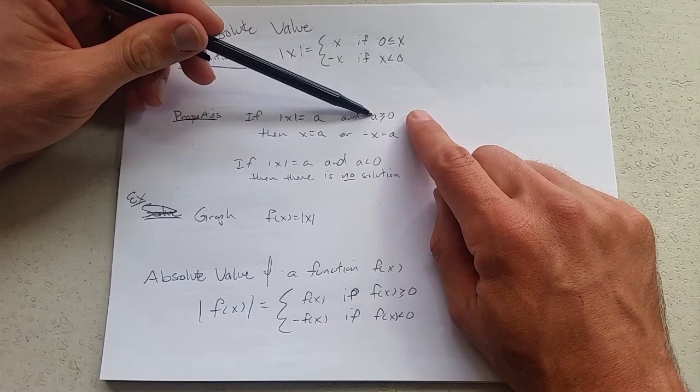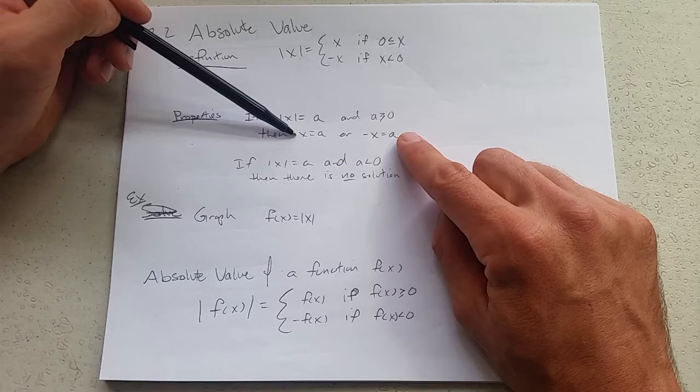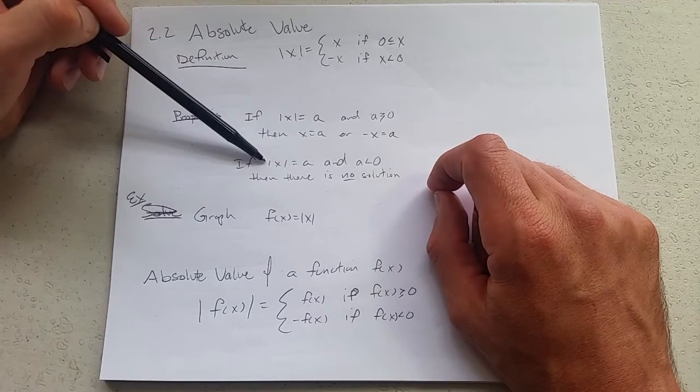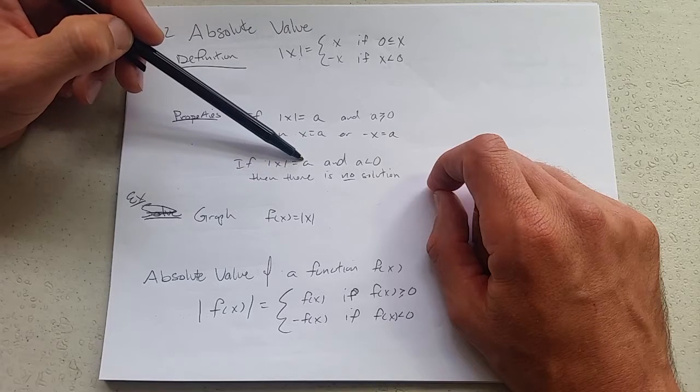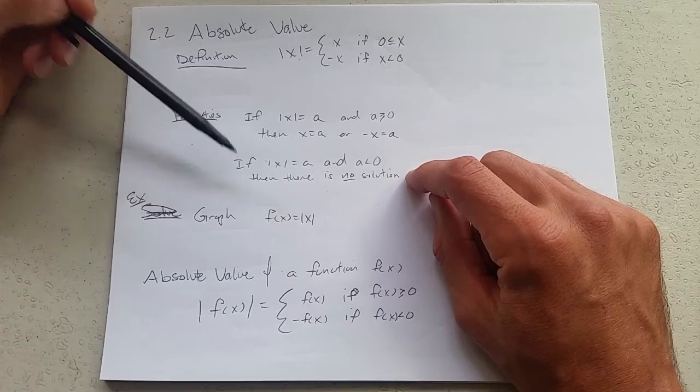This only works if a is greater than or equal to zero. If a equals zero it's not very exciting, you just get x equals zero. But what happens when a is negative? If absolute value of x equals a negative number there's no solution. Absolute value is always positive or zero.